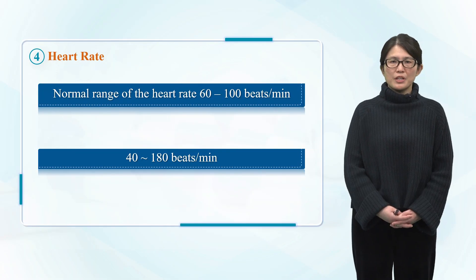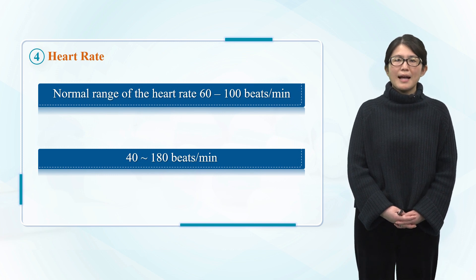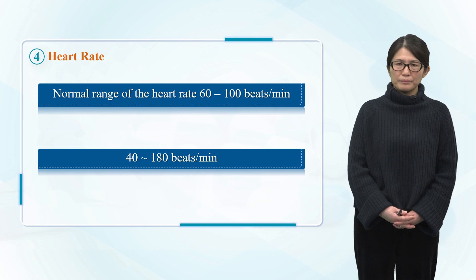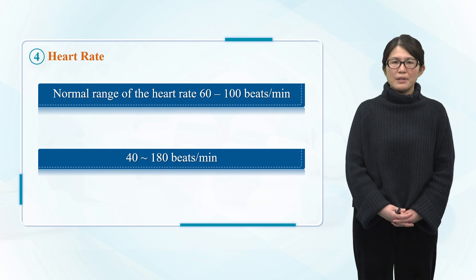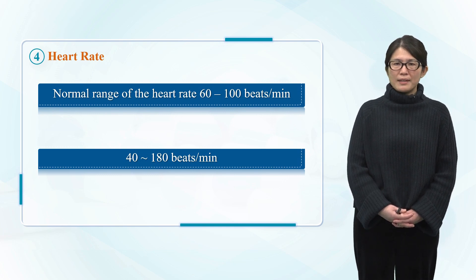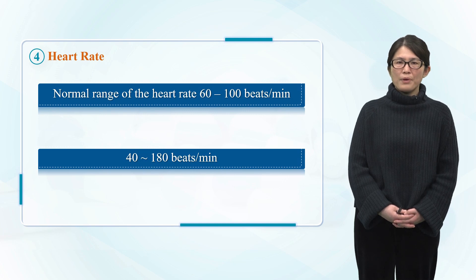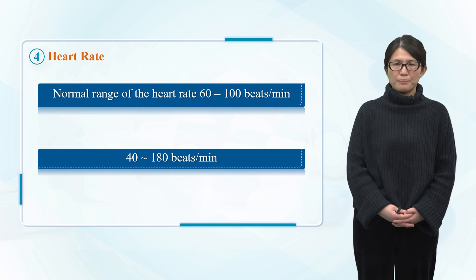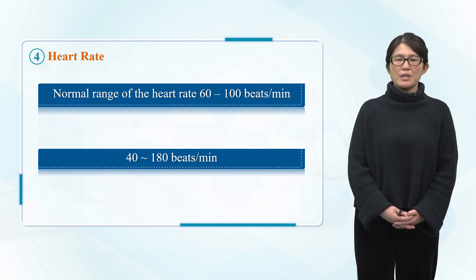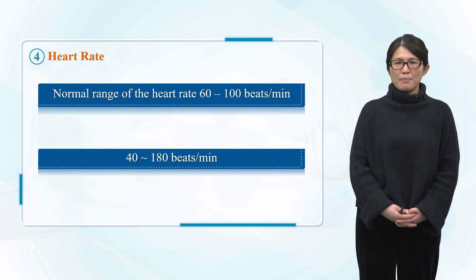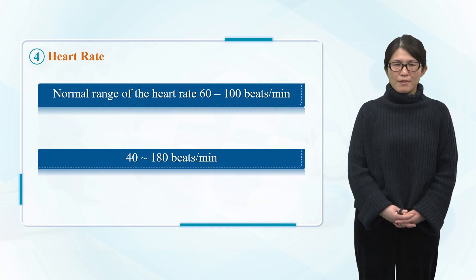When sympathetic nerve activity increases, heart rate increases. When vagal nerve activity increases, heart rate slows down. Heart rate increases when the levels of epinephrine and thyroid hormone in the circulation increase. Heart rate also increases by 12 to 18 beats per minute for every one degree increase in body temperature.